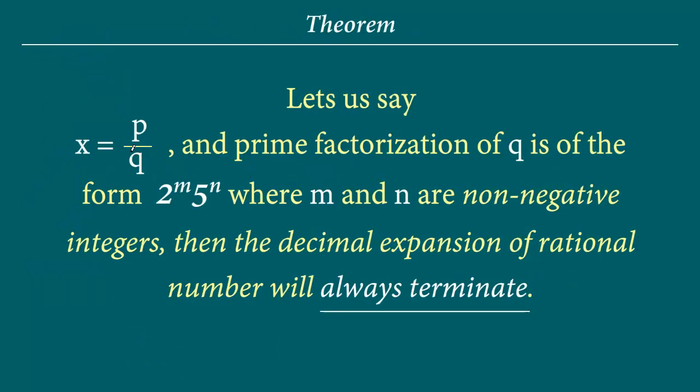So the theorem simply states that if we have a rational number which is written in the form of p by q and the prime factorization of q is of this form, then the decimal expansion will always be terminating.